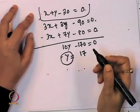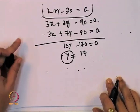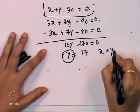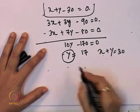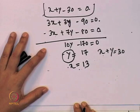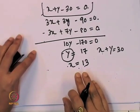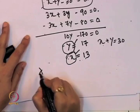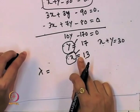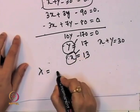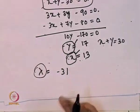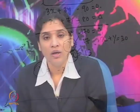We got the first unknown: y = 17. From x + y = 30, we get x = 13. These are the first two unknowns. The third unknown is λ, which can be obtained by substituting the values of x and y back into one of the equations, giving λ = −31. Once we put all values into the profit equation, we get the maximum profit.